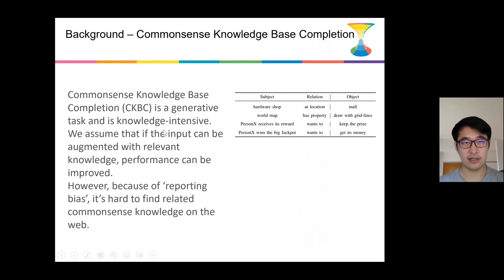The background is that commonsense knowledge-based completion, also called CKBC, is a generative task and is knowledge intensive. It can be shown in the right figure, where the models are required to generate the object given a subject and relation. We assume that if the input can be augmented with relevant knowledge, performance can be improved. However, because of reporting bias, it's hard to find related commonsense knowledge on the web.